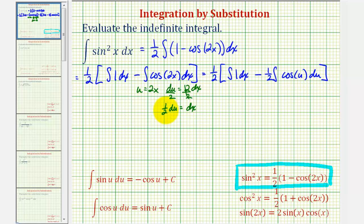Now let's go ahead and integrate. We'd have one half times the quantity of the integral of one with respect to x would just be x and then minus one half times the integral of cosine u which would be sine u or in this case since u is equal to two x, sine two x.